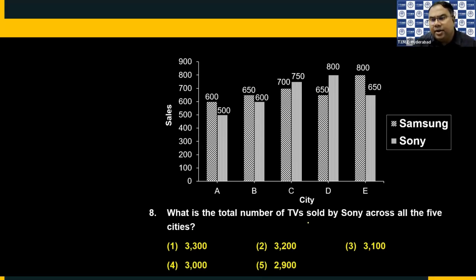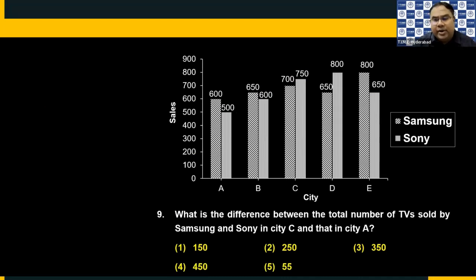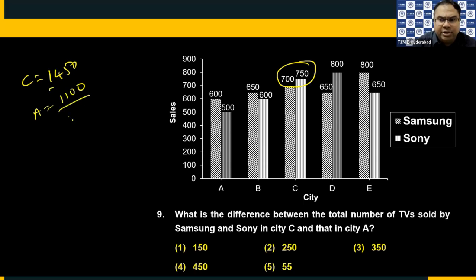Question eight: What is the total number of TVs sold by Sony across all five cities? Adding all Sony values: 500, 600 = 1100; 750 = 1850; 650 = 2500; 800 = 3300. So 3300 is choice one. Question nine: What is the difference between total TVs sold by Samsung and Sony in city C and that in city A? Samsung and Sony in C: 1450. In A: 1100. The difference is 350.